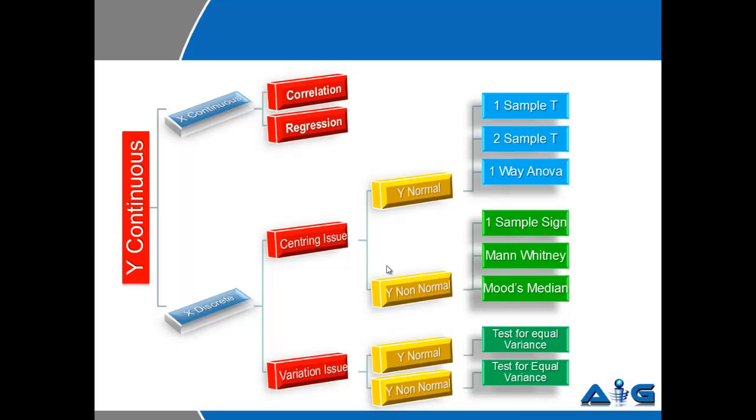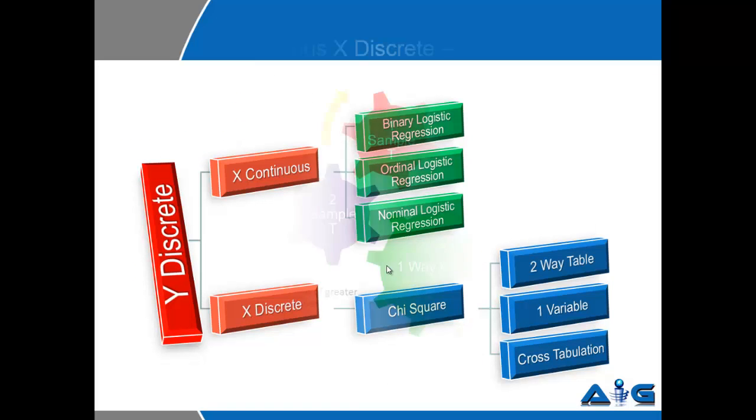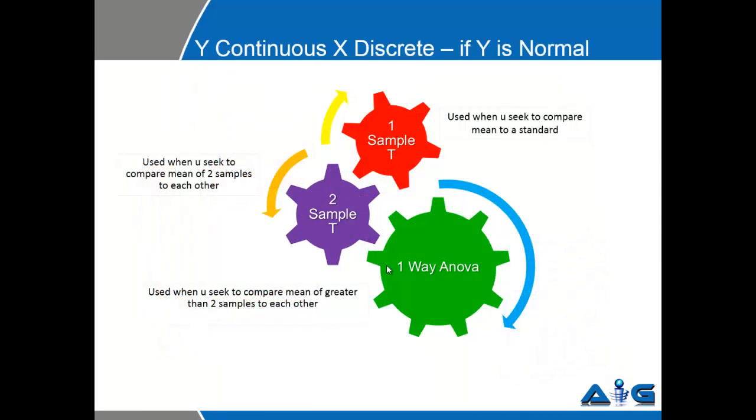Let's move on and try to understand the details about the test that you conduct when your Y is continuous and X is discrete. The issue is centering, like we discussed. When Y is continuous, X is discrete, and Y is normally distributed, we have three simple tests.